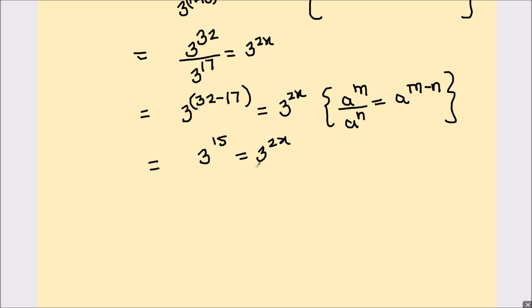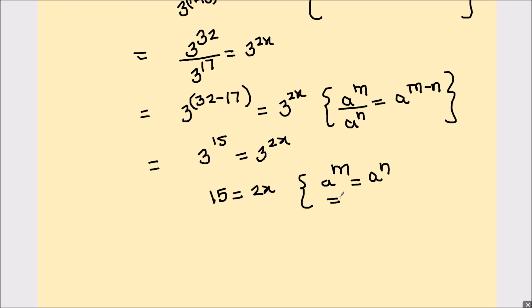Now as the bases are the same, the powers or exponents will also be the same. So that's going to be 15 equals 2x. This is by the law: if a raised to power m equals a raised to power n, then m equals n. So x will be equal to 15 divided by 2.